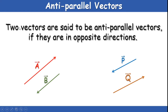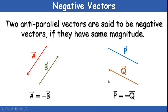Anti-parallel vectors: two vectors are said to be anti-parallel if they are in opposite directions. If the two vectors are moving in different or opposite directions, those vectors are anti-parallel. For example, vector A is moving upwards whereas vector B is moving downwards — they are in opposite directions, so they are anti-parallel vectors. Same applies to P and Q.